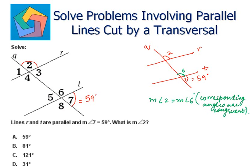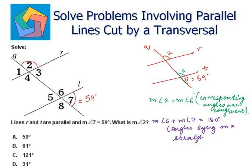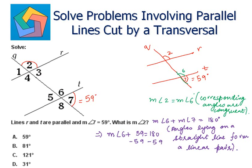And if you see angle 6 and angle 7, they are lying on a straight line, so they will form a linear pair. That is, the measure of both angles added together will be 180 degrees. So we can say measure of angle 6 plus measure of angle 7 is equal to 180 degrees. Angles lying on a straight line form a linear pair. This implies measure of angle 6 is equal to 121 degrees.